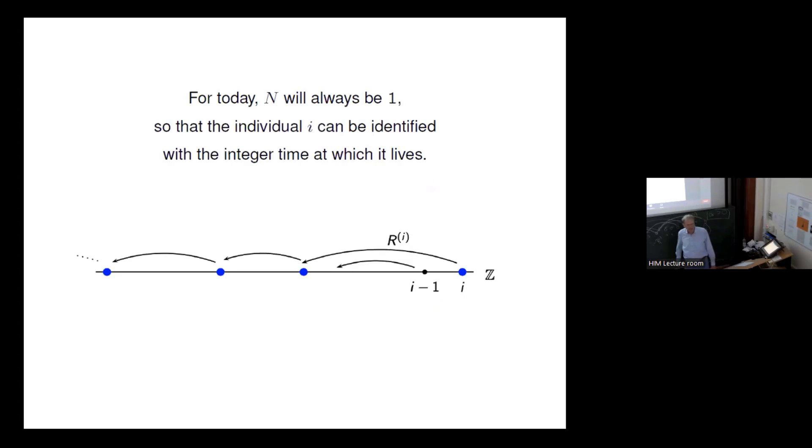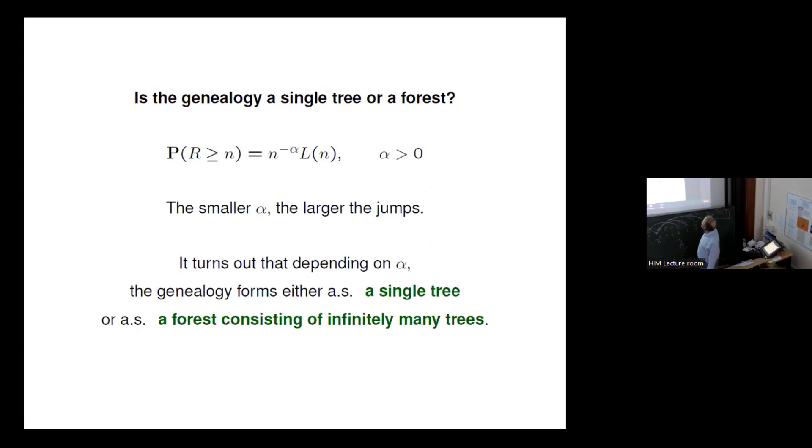For today we will take the simple case, N will always be one so that's this situation and an individual can be identified with the time at which it lives, at which it comes into the urn if you like. That's the individual i.